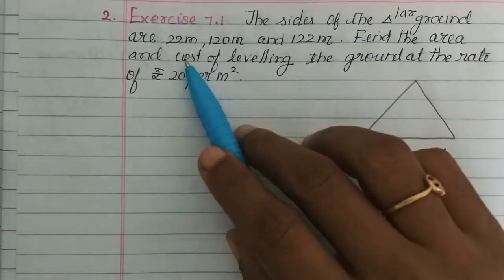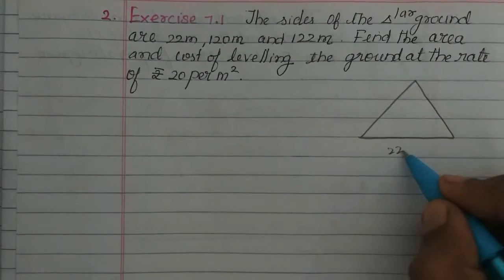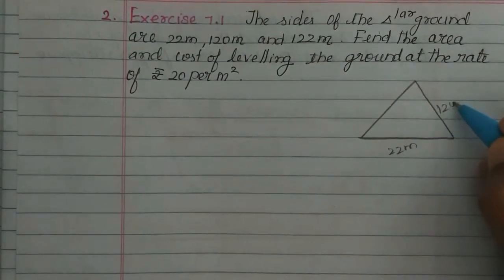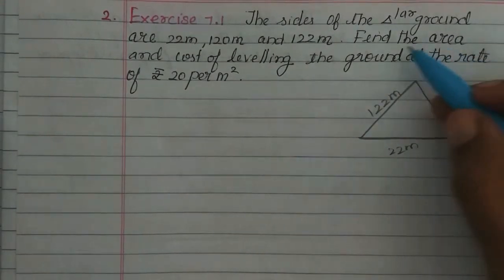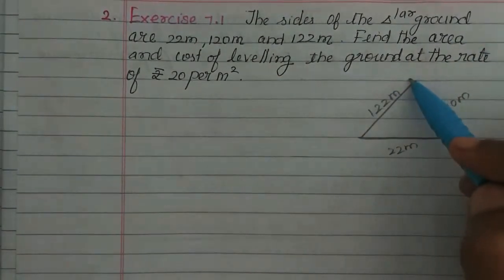The sides of the triangular ground are 22m, 120m and 122m. We need to find the area and cost of leveling the ground.